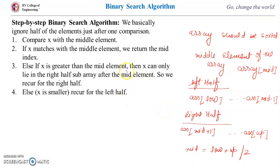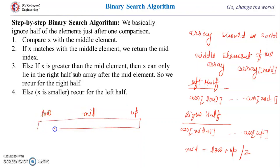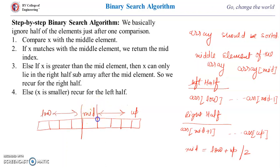The first step is to compare x, the item we want to search, with the middle element. If it matches, we return the mid index. If the item is greater than array[mid], we search in the right half, which is array[mid+1] to array[up] — so low becomes mid+1 and up remains the same. If the item is less than array[mid], we search in the left half, which is array[low] to array[mid-1] — so low remains the same and up becomes mid-1.